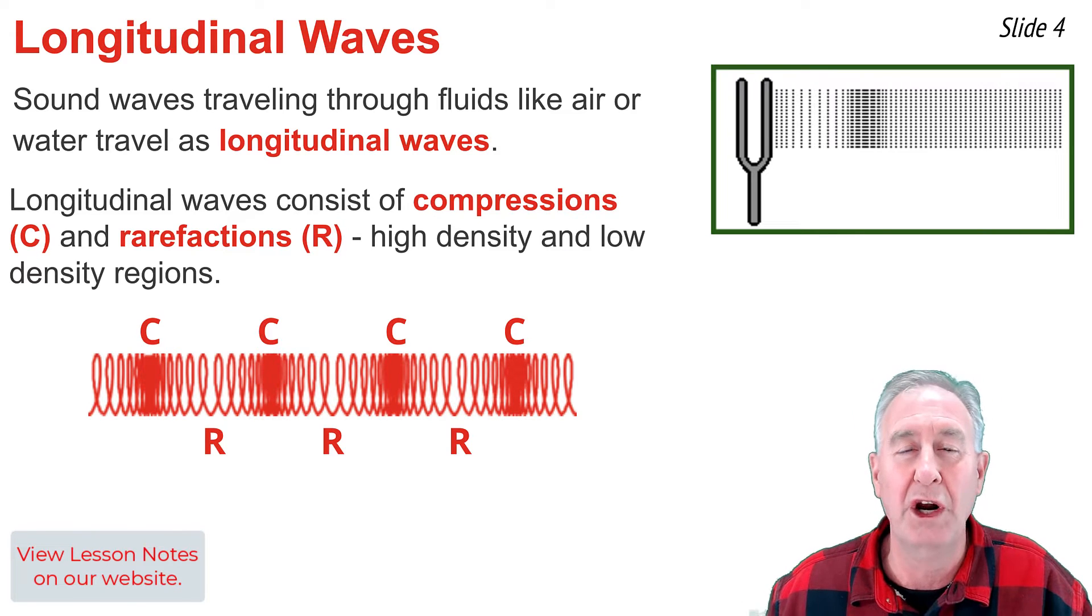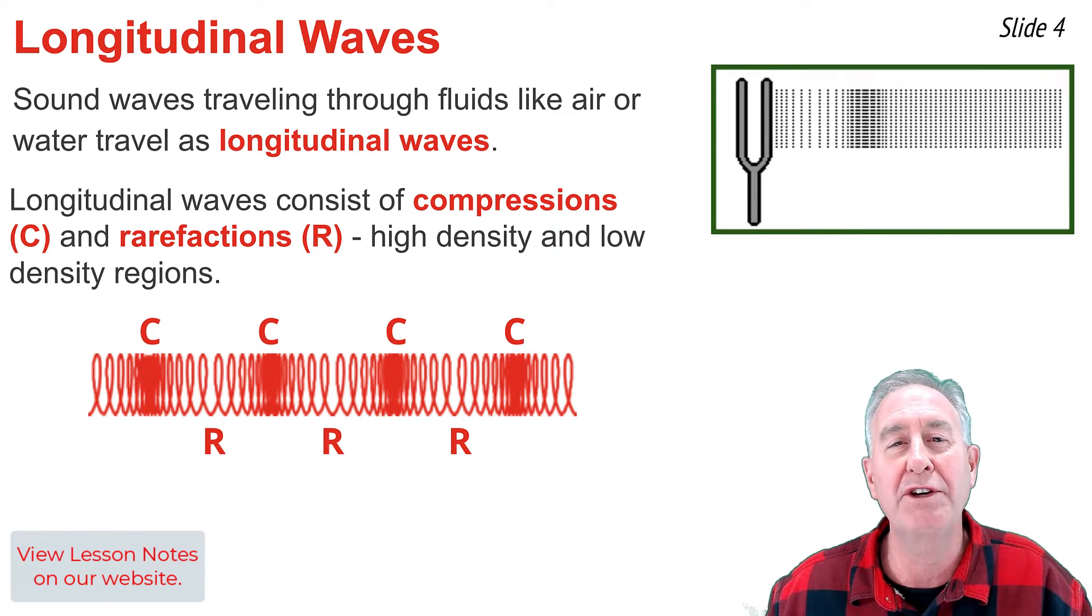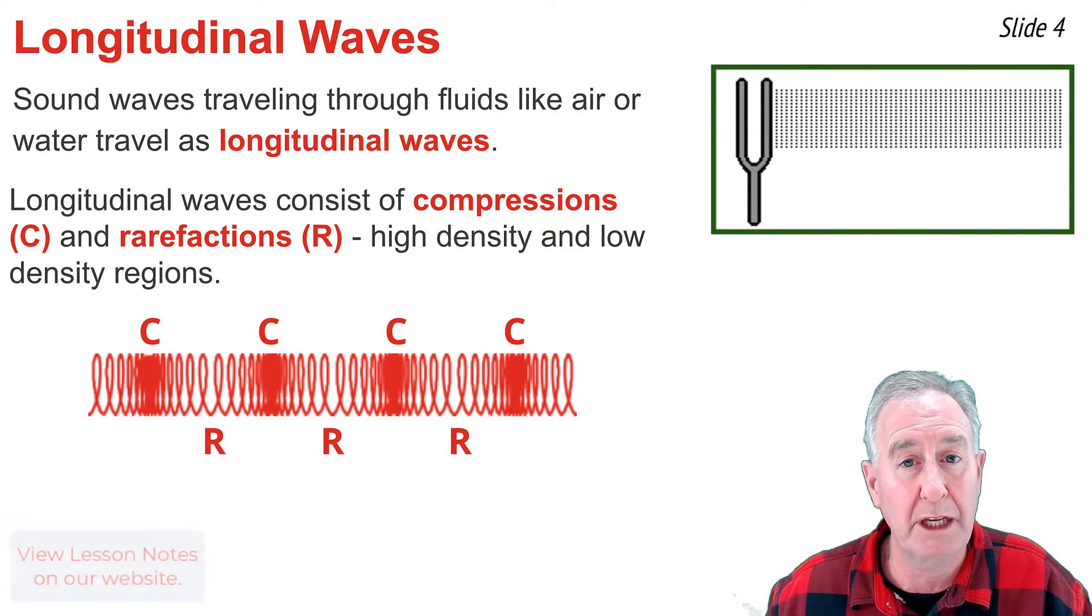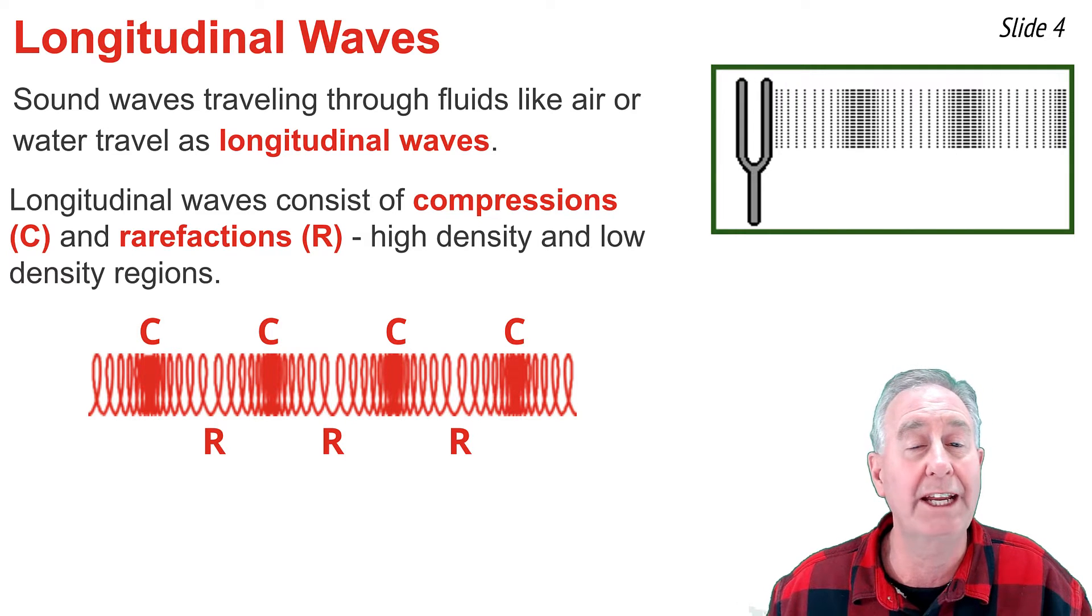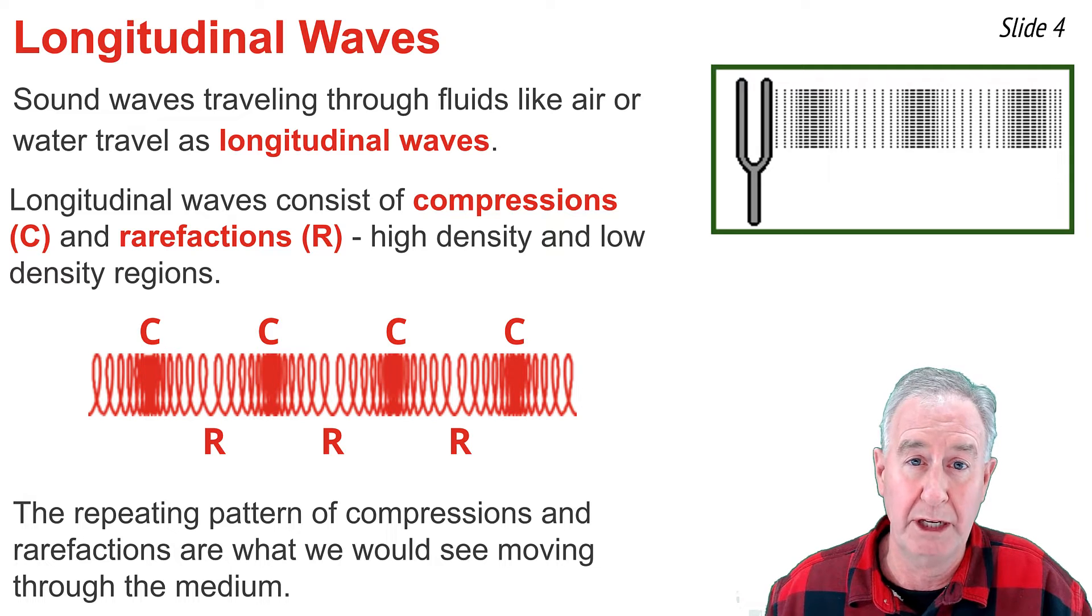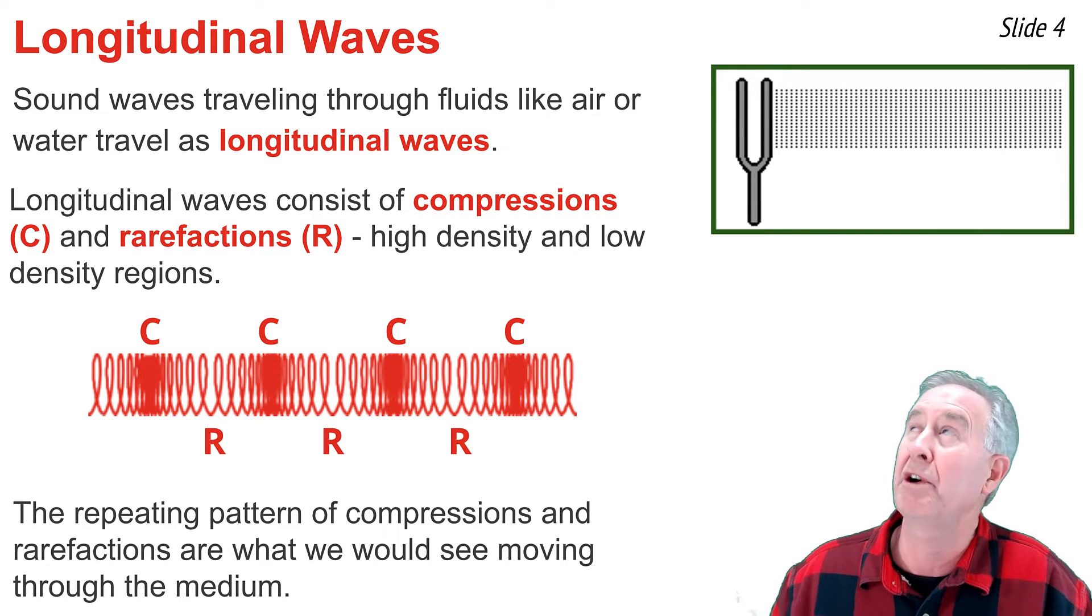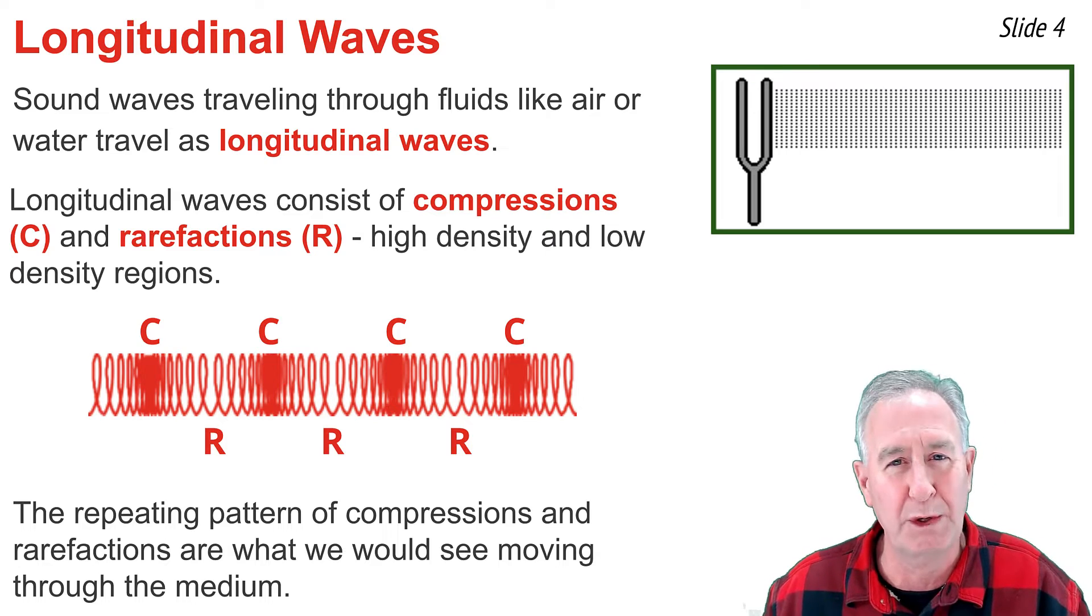So compressions are high-density regions, and rarefactions are low-density regions. When you have a transverse wave moving through a medium, you see a pattern of alternating crests and troughs. But for longitudinal waves moving through a medium, you see a repeating pattern of alternating compressions and rarefactions that propagate outwards from the source.